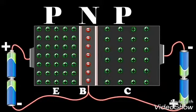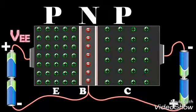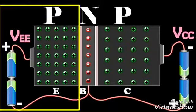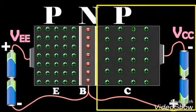At each junction there is a depletion region which gives rise to a potential barrier. The external biasing of the junction is provided by the batteries VEE and VCC, as shown in the diagram. The emitter-base junction is forward biased and the collector-base junction is reverse biased.